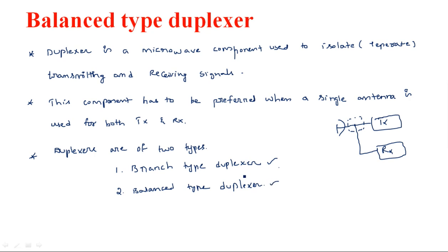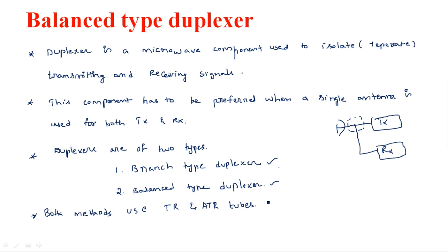In both branch type and balanced type duplexers, TR and ATR tubes are used. TR stands for Transmit-Receive and ATR stands for Anti-Transmit-Receive. These are gas discharge tubes.